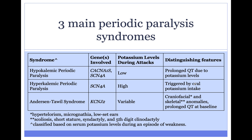There are three main periodic paralysis syndromes. They can be classified both by the genes involved as well as by the serum potassium levels during an attack.